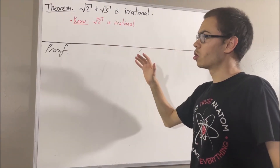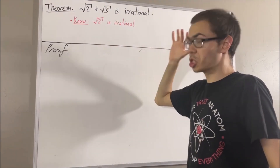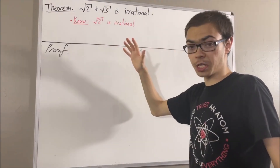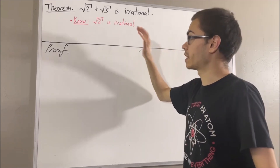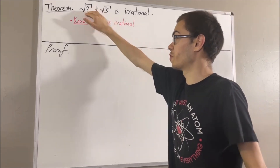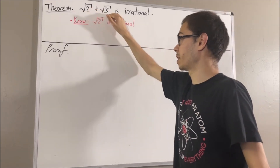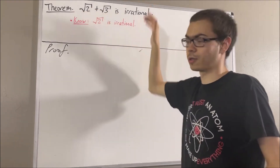To start out, we're going to assume for a contradiction that we instead have that the square root of 2 plus the square root of 3 is rational.